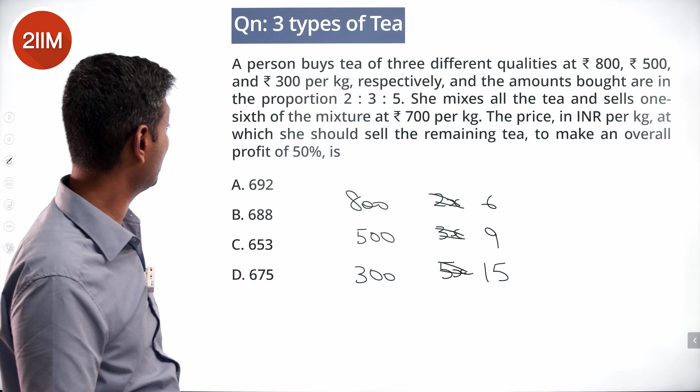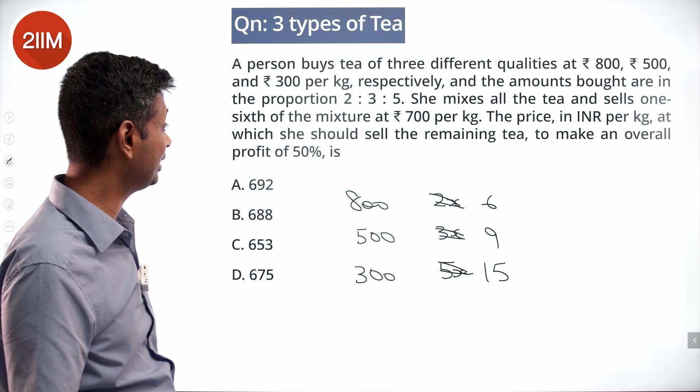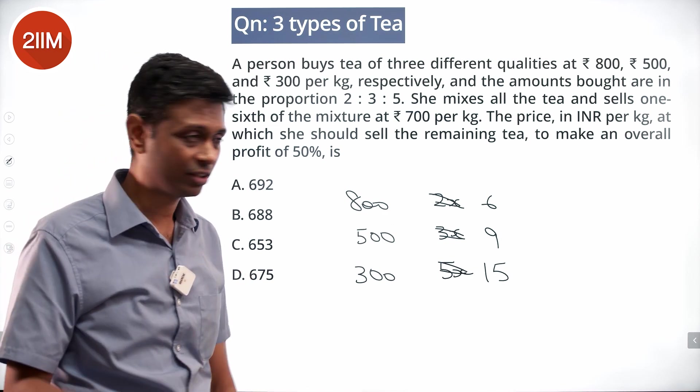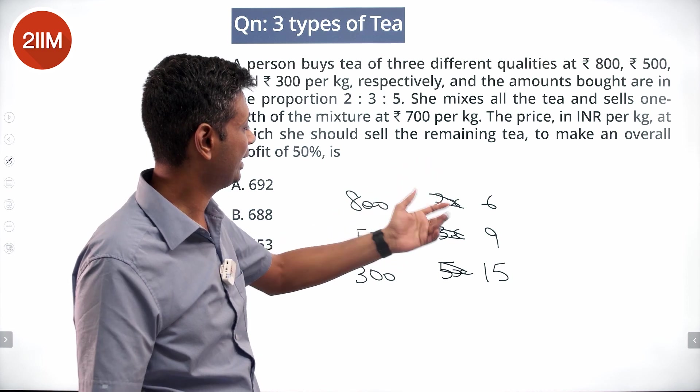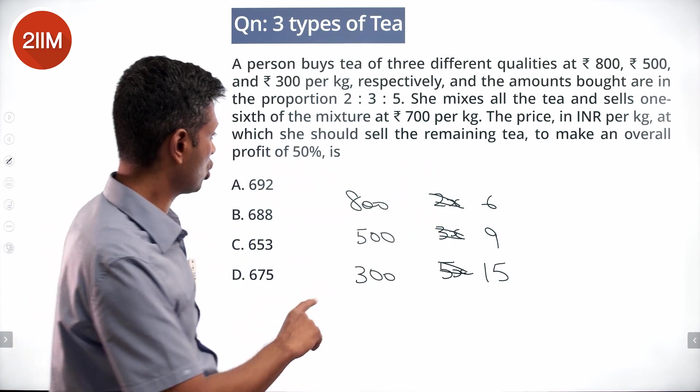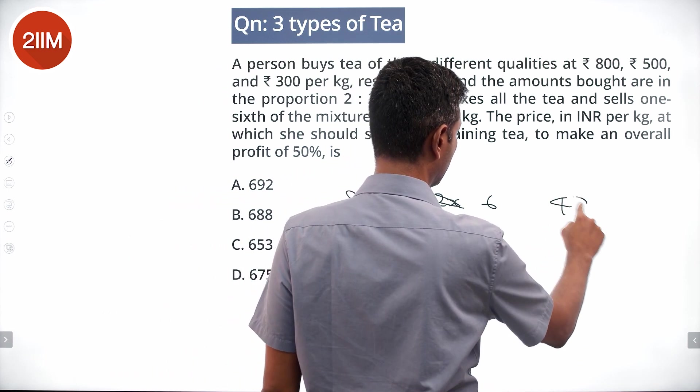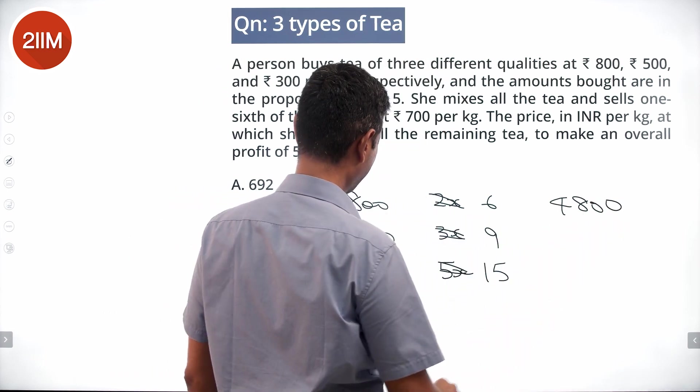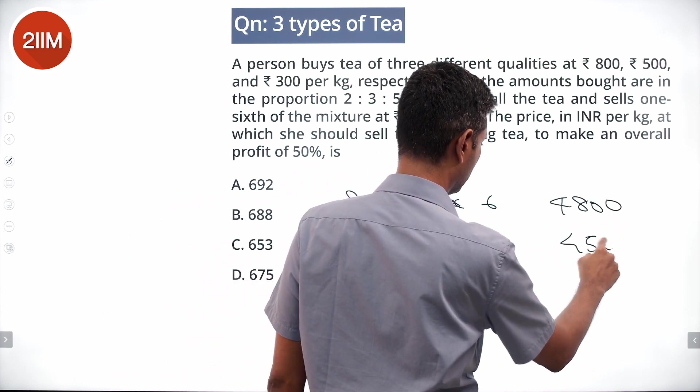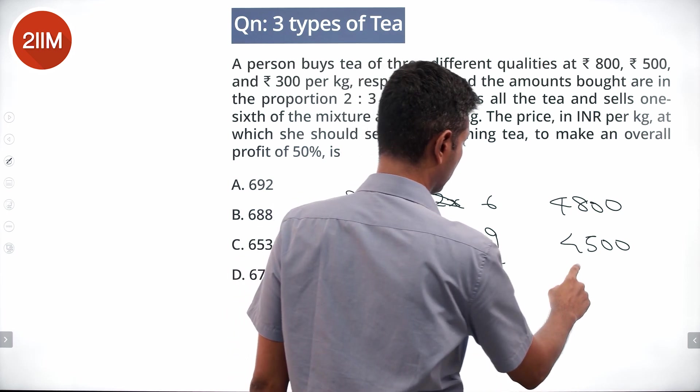The price in INR per kilogram at which she should sell the remaining tea to make an overall profit of 50%. So let's say she buys 6 kilos of this, 9 kilos of this, 15 kilos of this. Total cost is 6 into 800, 4800. 9 into 500, 4500. 15 into 300, 4500.